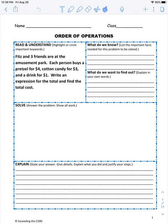So here's our problem: Fitz and three friends are at an amusement park. Each person buys a pretzel for $4, cotton candy for $3, and a drink for $1. Write an expression for the total and find the total cost.